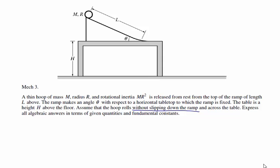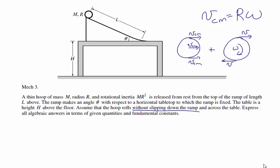Because it rolls without slipping, the point of contact between the hoop and the ramp is stationary. Slipping means that there's motion between those two surfaces. Not slipping means that the velocity at that point of contact is zero. If that point of contact is going to have a velocity of zero, we're looking at a combination of rotation around the center of mass as well as linear motion.